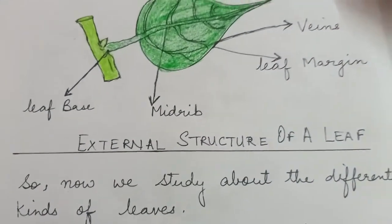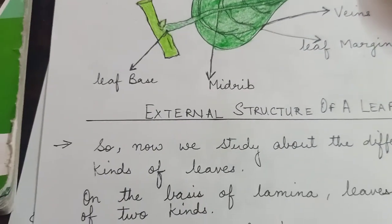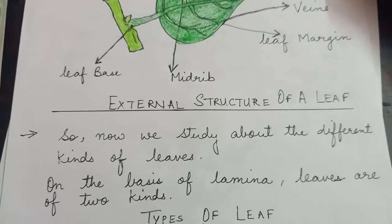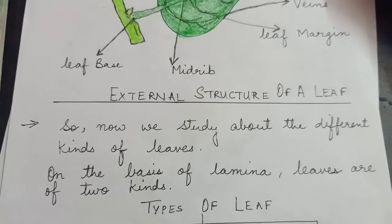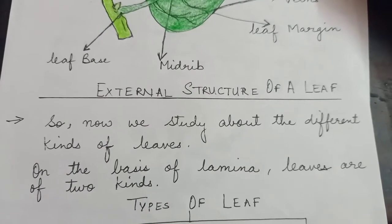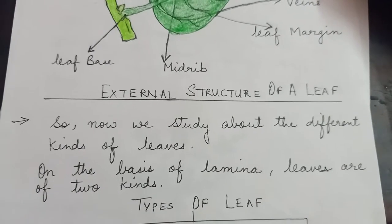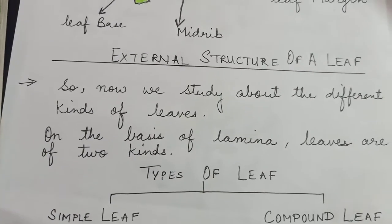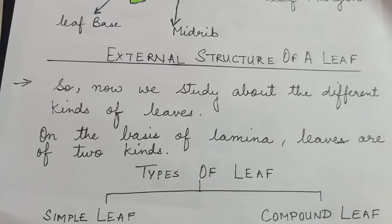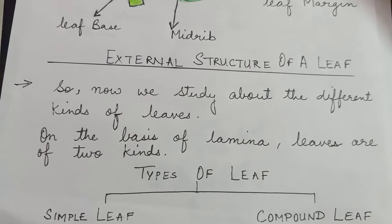Now we will study the different kinds of leaves. On the basis of lamina, leaves are of two kinds: the first is simple leaf and the other one is compound leaf.